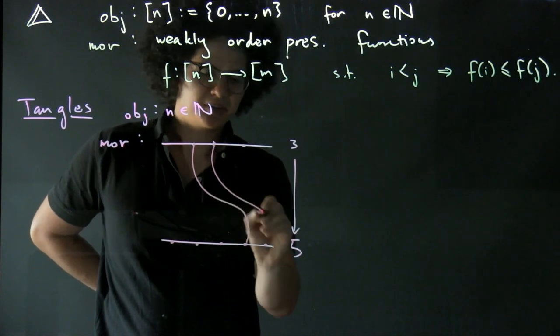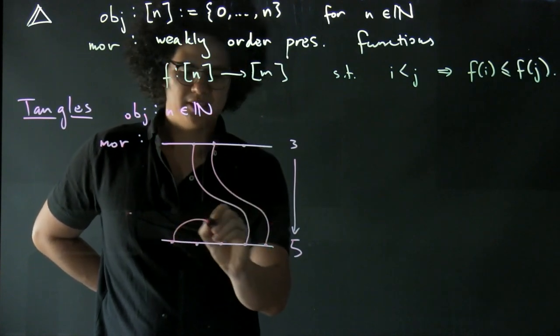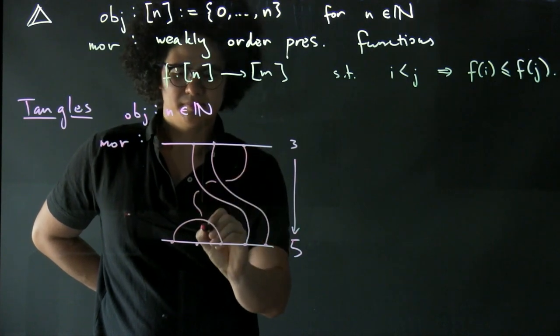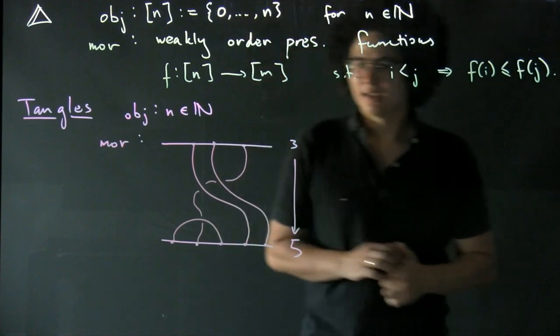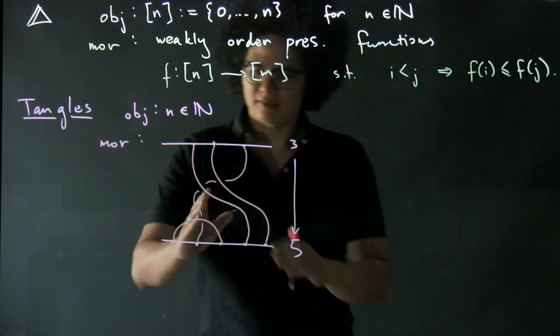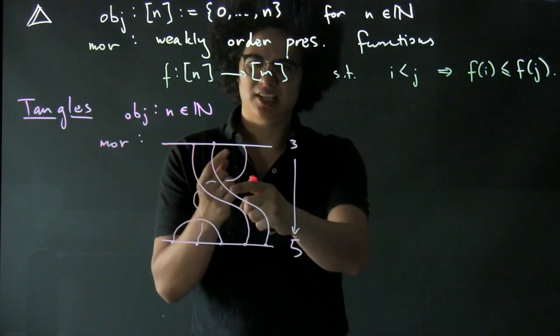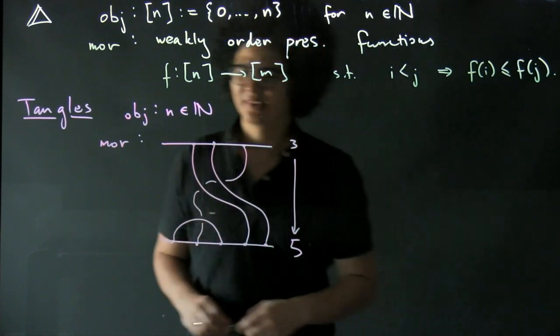And my morphisms are going to be things that look like this. And you can wiggle these strings about, but you can't change the crossings of them.